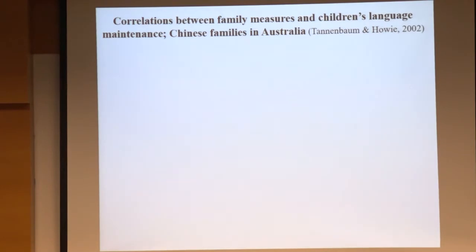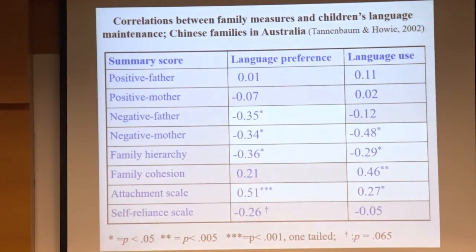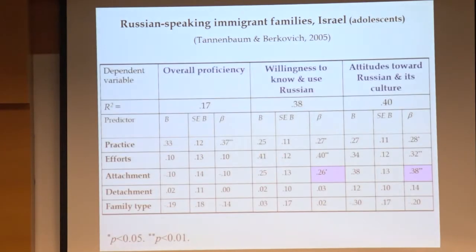This is my PhD study, done long ago in the Australian context with Chinese families. I looked at the relationship between various emotional aspects including attachment, family relations, and family cohesion, and found significant correlations with language use and language preference among both children and parents. A few years later, a student of mine here in Tel Aviv did a similar study about Russian immigrants, and we also found significant correlations with attachment relations — one way of looking into intimate emotional relationships with parents.